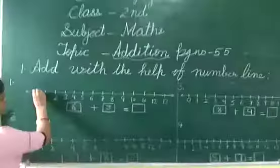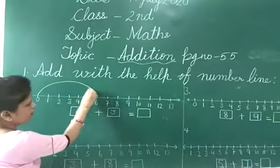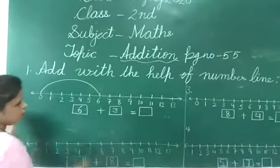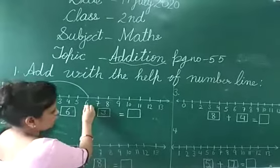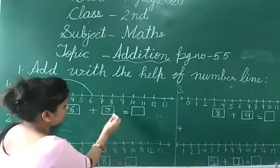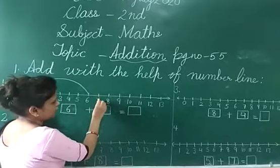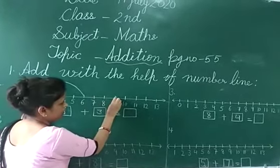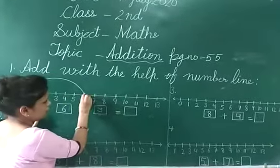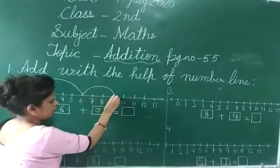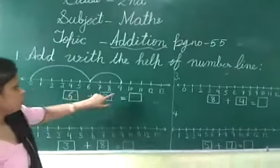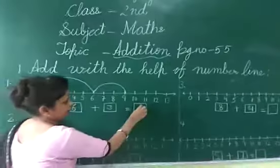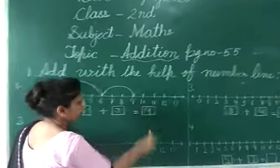You can see that we start by marking zero, then mark 6. How do we jump from zero? We count 6 jumps. Then we add 3. We have to count forward from 6 by 3: count as 1, 2, 3. We make 3 jumps. Then our answer will be 9.